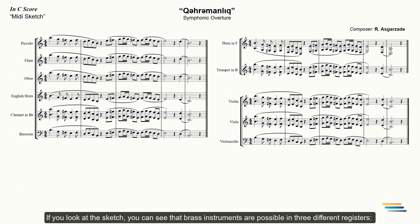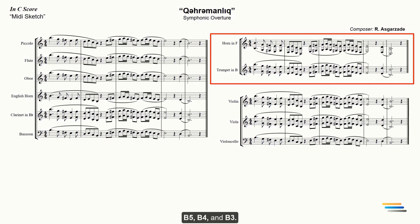If you look at the sketch, you can see that brass instruments are possible in three different registers: B5, B4 and B3. Let's arrange the brass according to these registers.